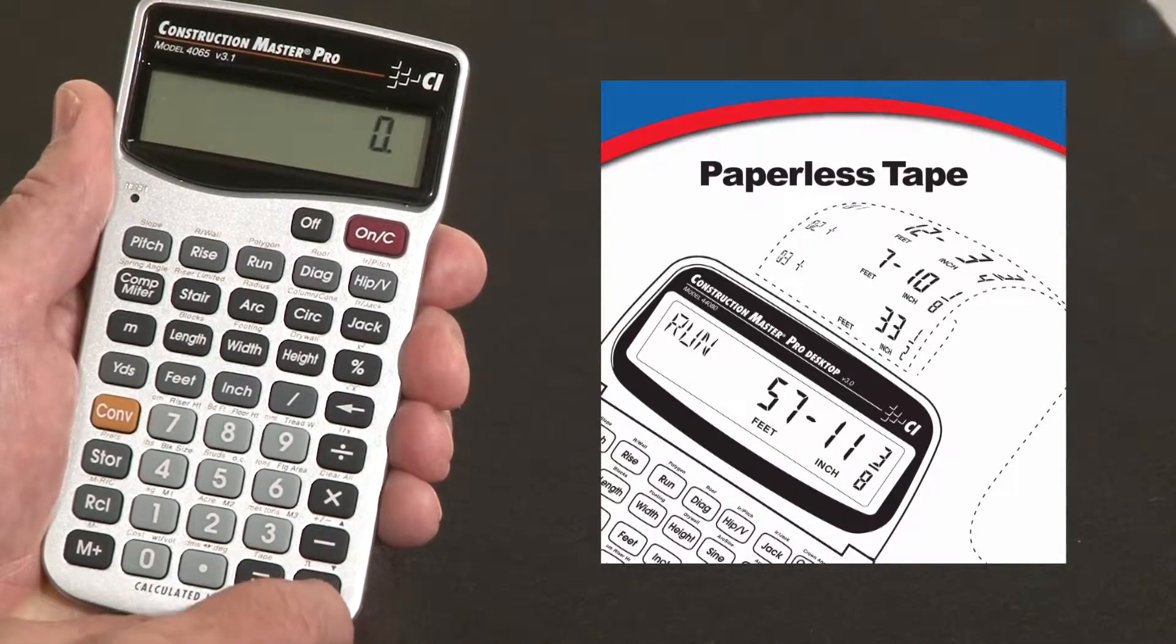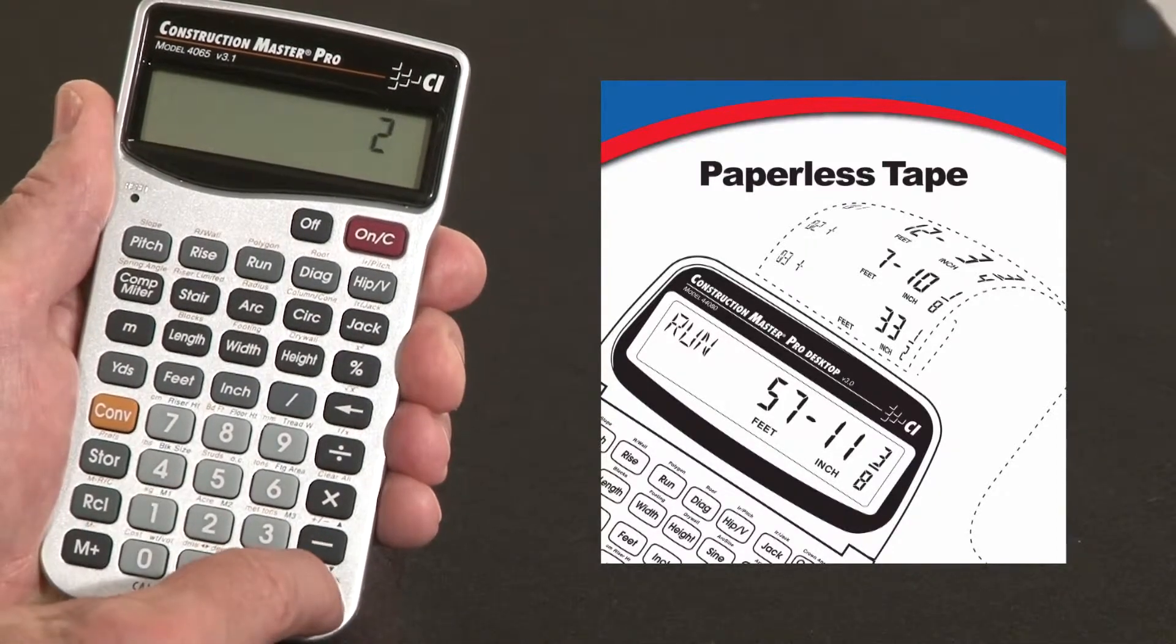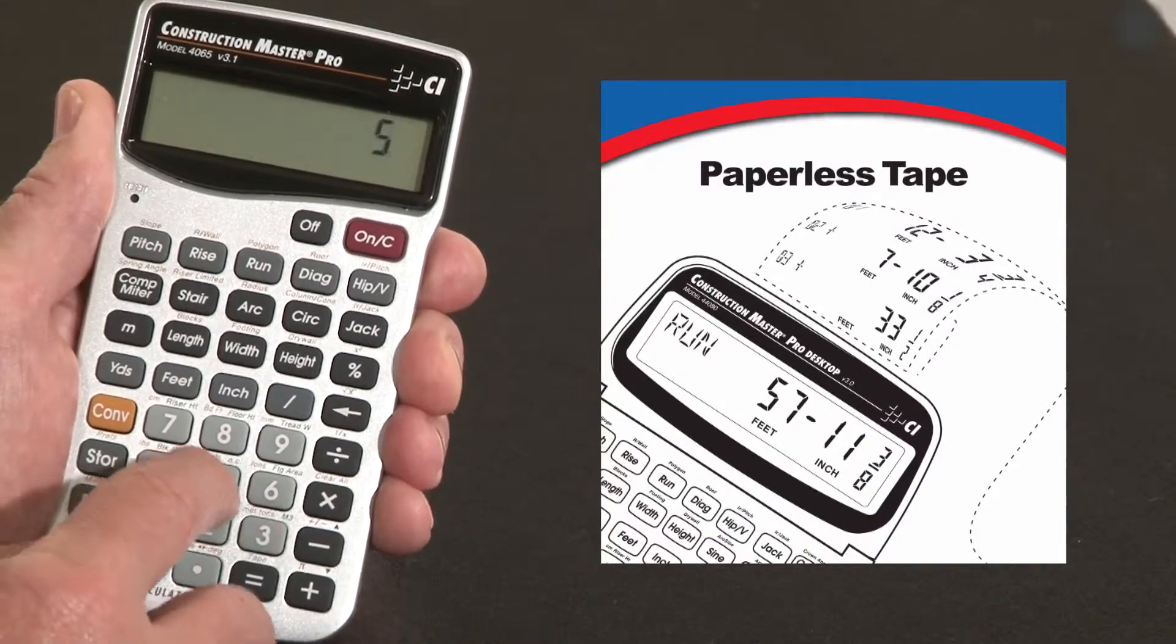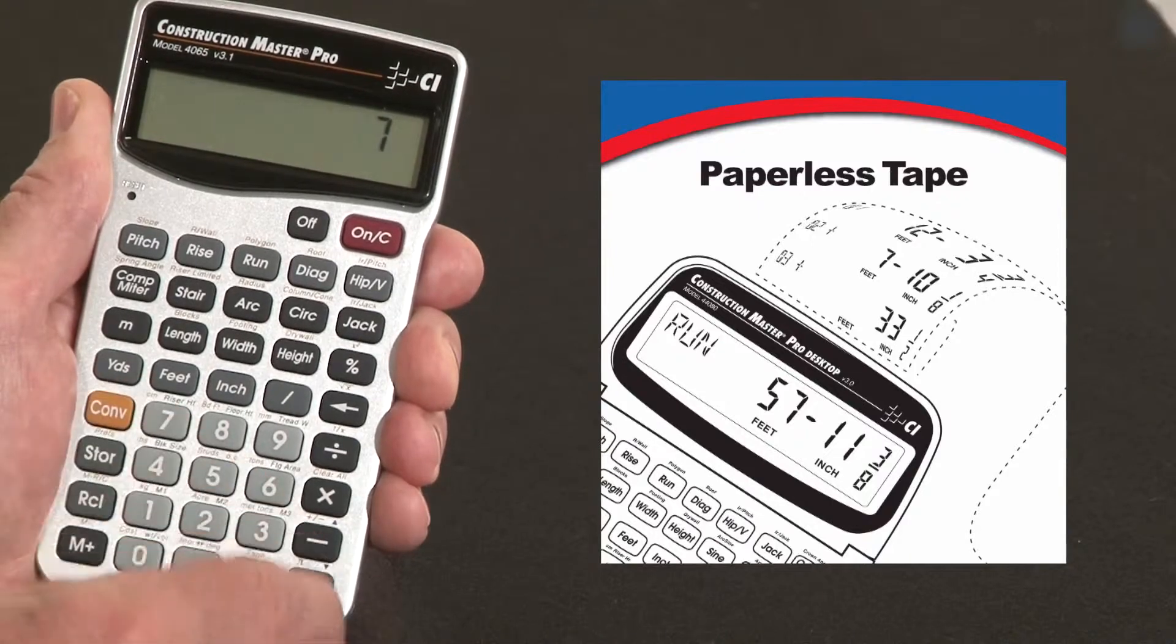For instance, let me add a string of dimensions. I'll just go without the dimensions to make it faster. Two plus three plus four plus five plus seven equals.